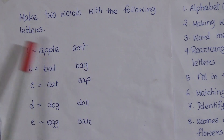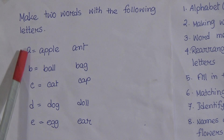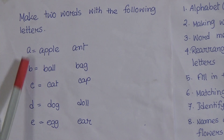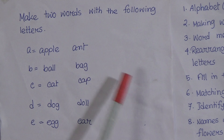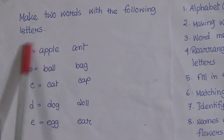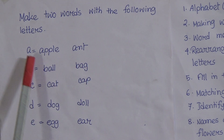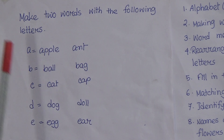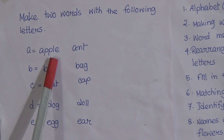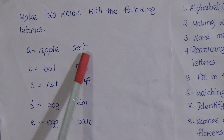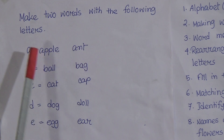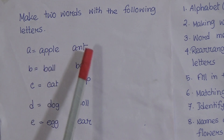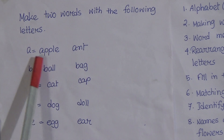Today we will learn only five-letter word making. First, A — A for apple. Apple is spelled A-P-P-L-E.